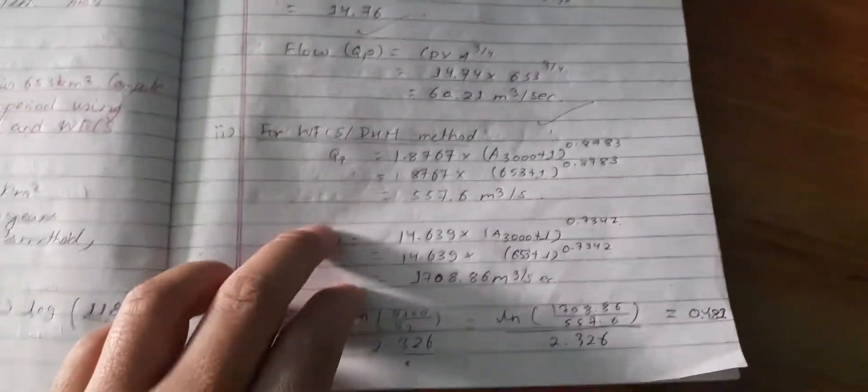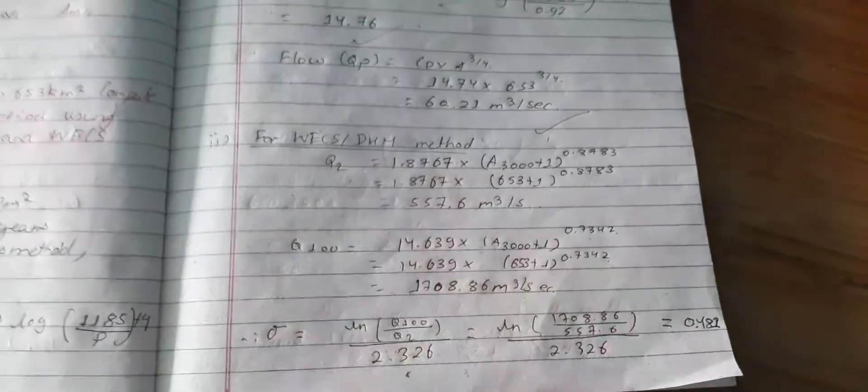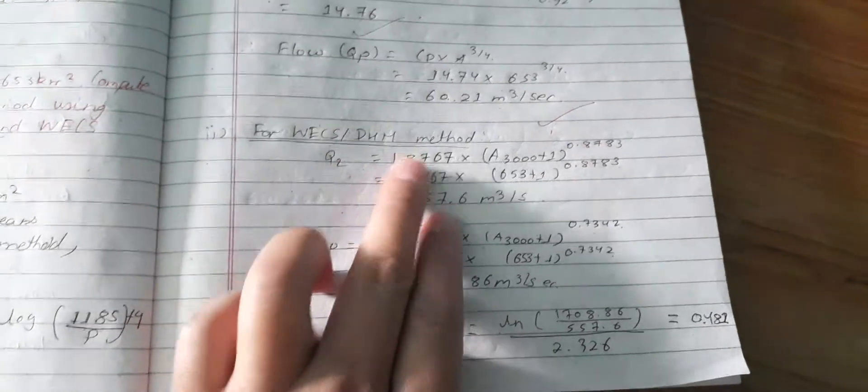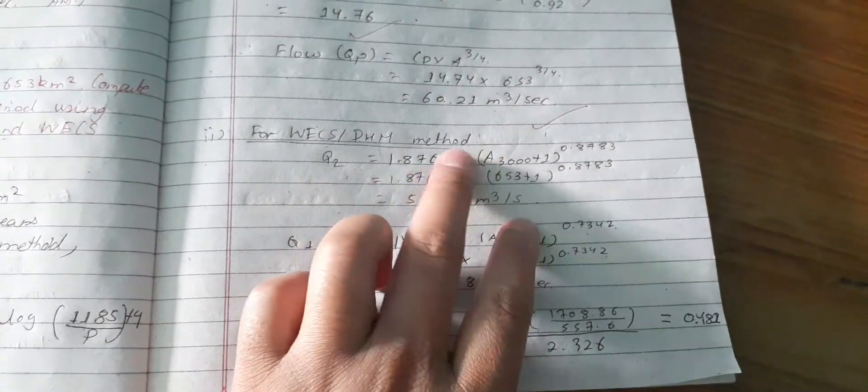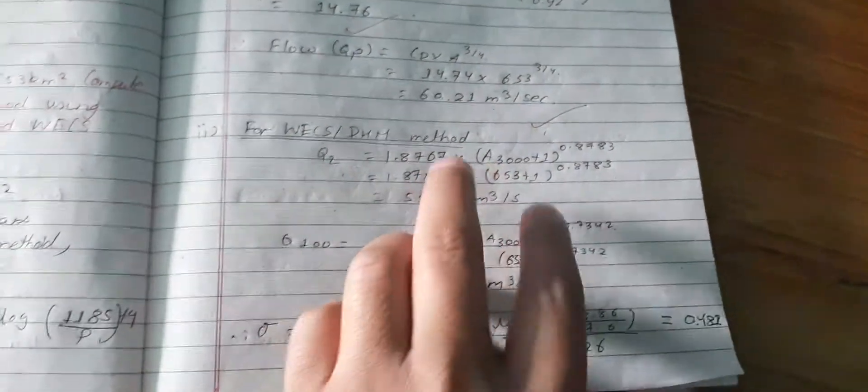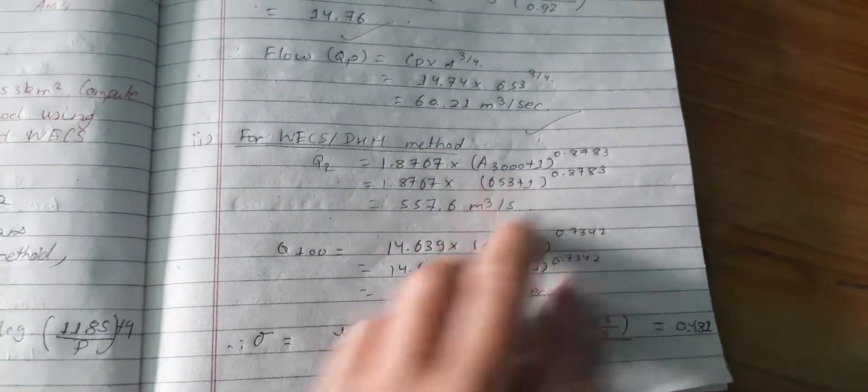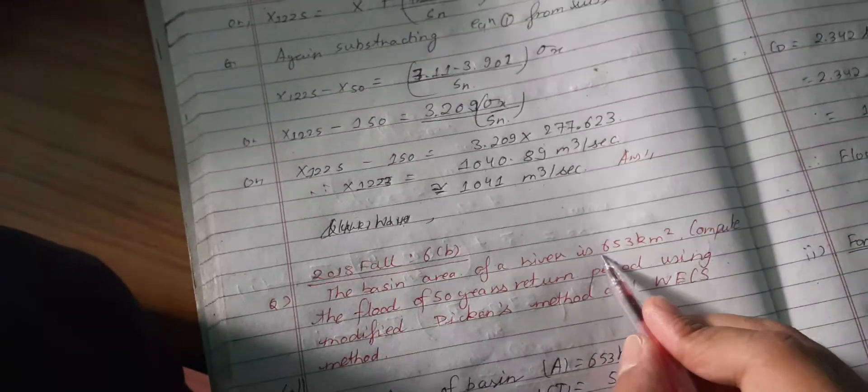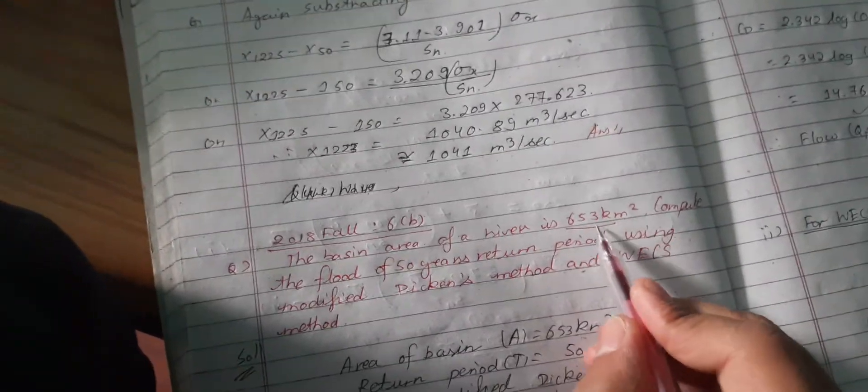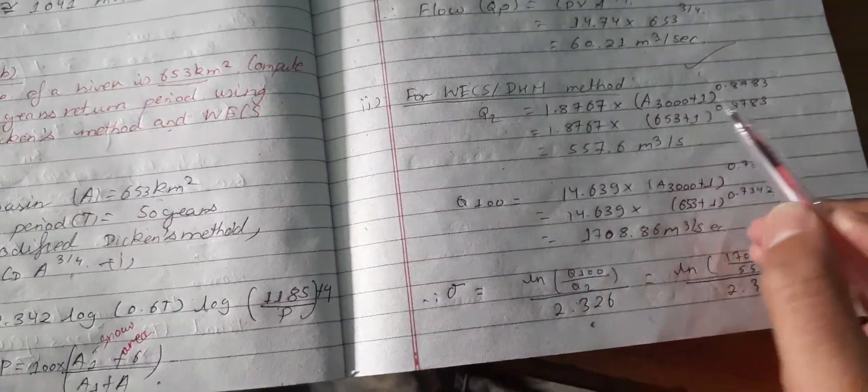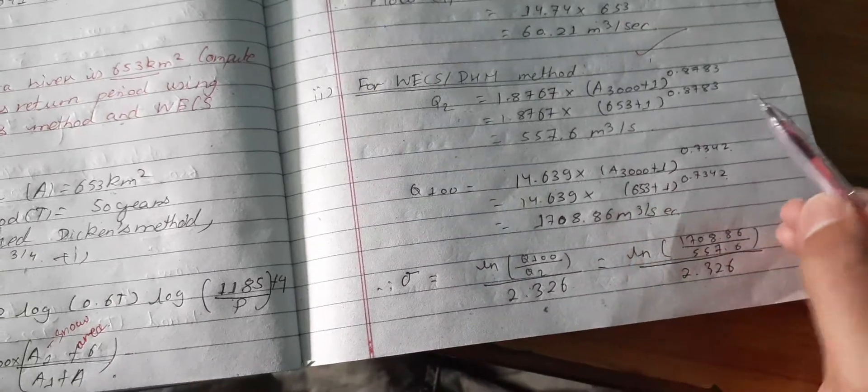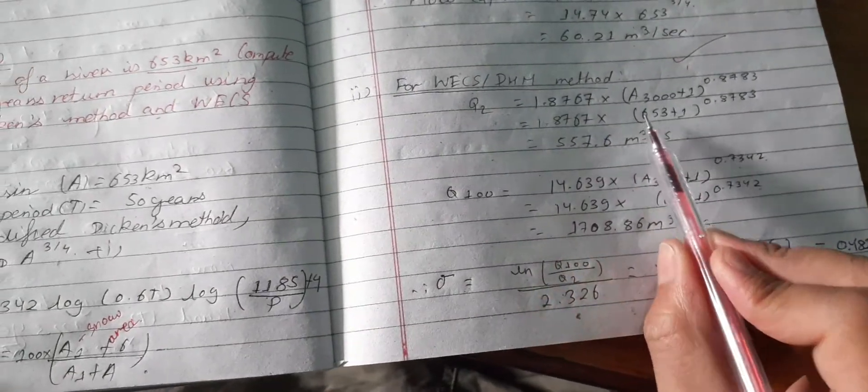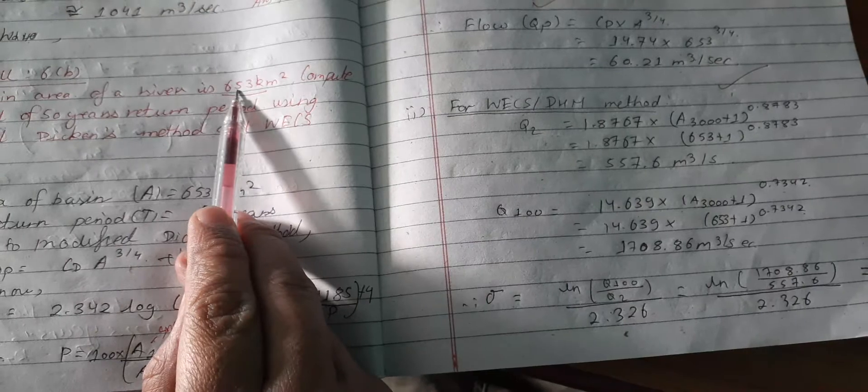So let's start the WCS method. We have Q₂ = 1.8767 × area, that is the area below 3000 meter elevation. The given area is 653 km², area below 3000 meter.